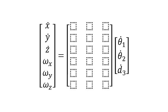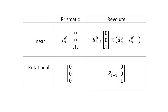The way we do this is by using a table that tells us how to fill in each column. The table looks like this. There are two rows: the top row is for determining the linear parts of the end effector velocity, and the second row is for finding the rotational parts of the velocity. There are also two columns — the first for prismatic joints and the second for revolute joints.